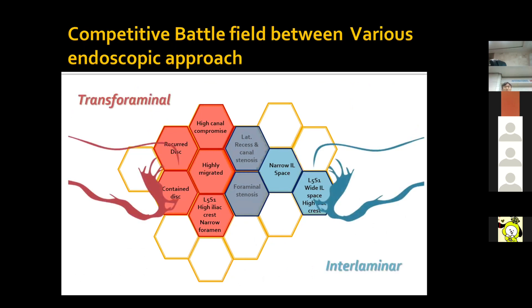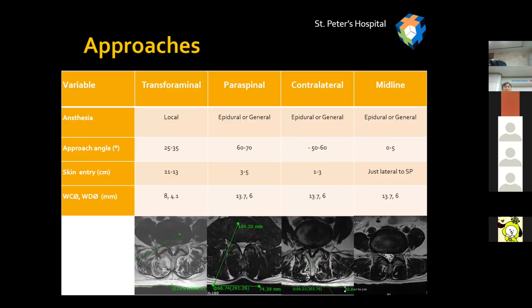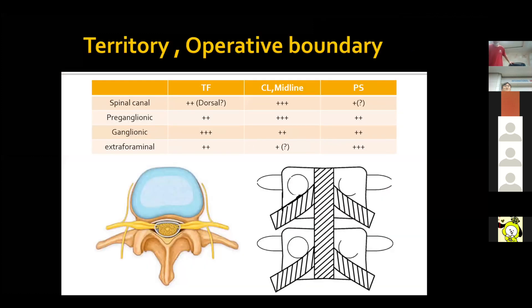We are truly entering the era of competition between several endoscopic approaches. Each approach has a unique approach angle and skin entry point. The transforaminal approach is performed under local anesthesia with a 30-degree approach angle and entry point lateral from the midline. Compared to the transforaminal approach, paraspinal and contralateral approaches are performed with steeper approach angles and use larger endoscopes designed for stenosis. Each approach has its own working boundary — the transforaminal approach covers a wide area from the extraforaminal to the foraminal and spinal canal, including ventral pathologies.